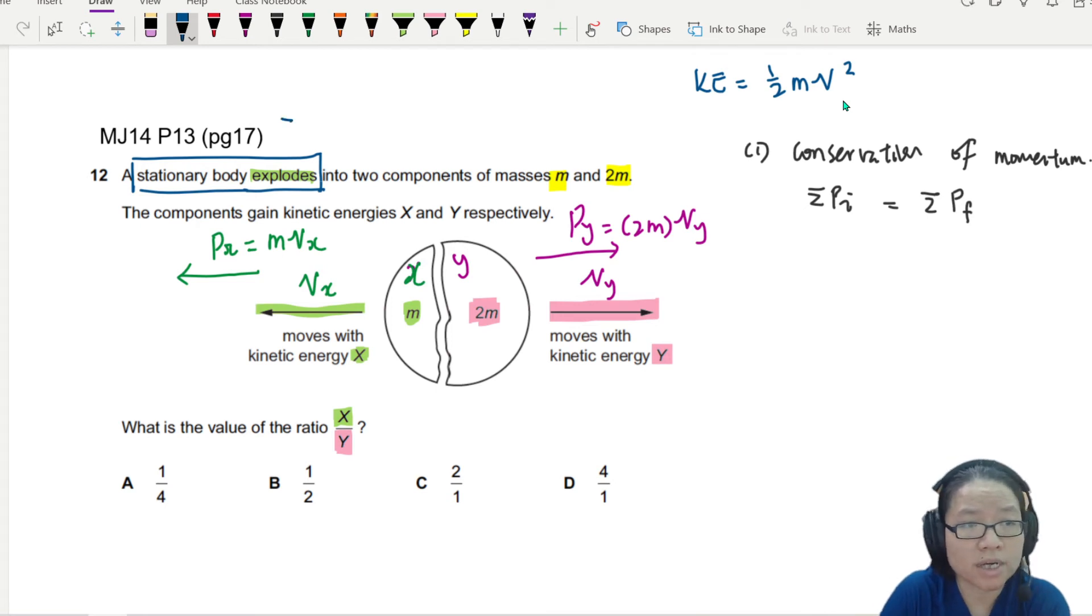So from here, I can say the sum of the initial momentum is 0. So I'm going to put 0 here. Final momentum. You have your two pieces. So I'm going to add them together, right? So that would be Px plus Py.